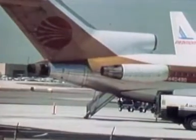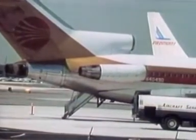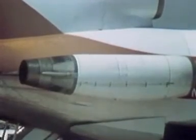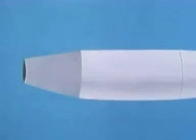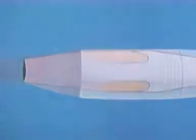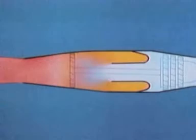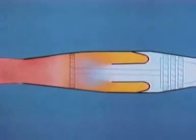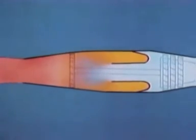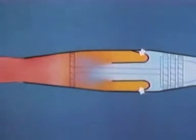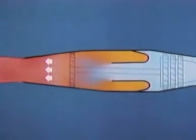Some planes have jet engines instead of propellers. A jet engine sucks in air at the front. Then, burning fuel heats it and greatly expands the air. This hot air rushes out the back and pushes the plane forward.